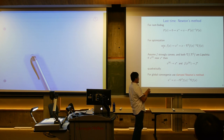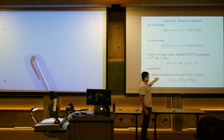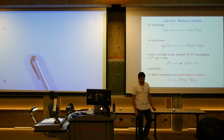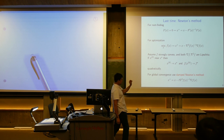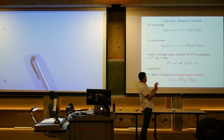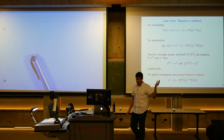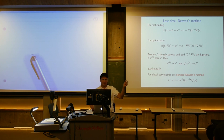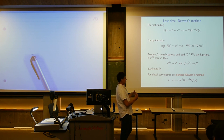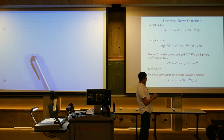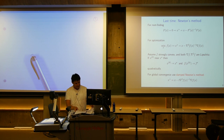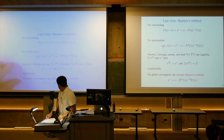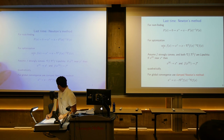For global convergence, which we discussed last time, we do a small tweak on Newton's method called damped Newton's method. Instead of taking the full Newton step, we do a line search to choose exactly how much we move along the Newton direction, using backtracking with an Armijo condition. That is a summary of what we did last time.